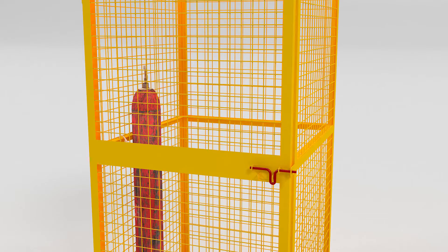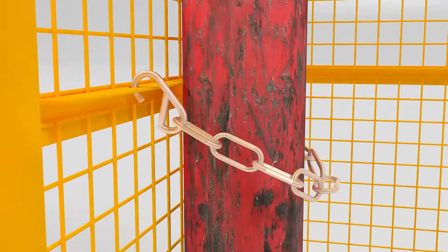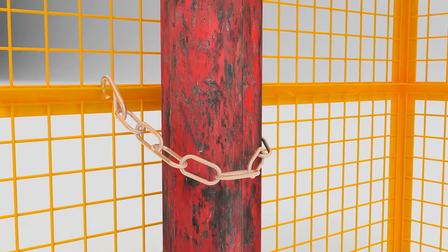Hook holes can be reserved in the compartment to prevent cylinders that must be placed vertically from tipping over when shaken.